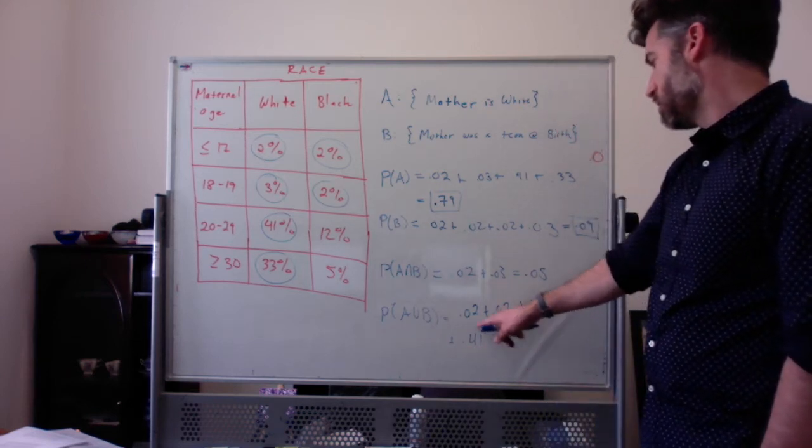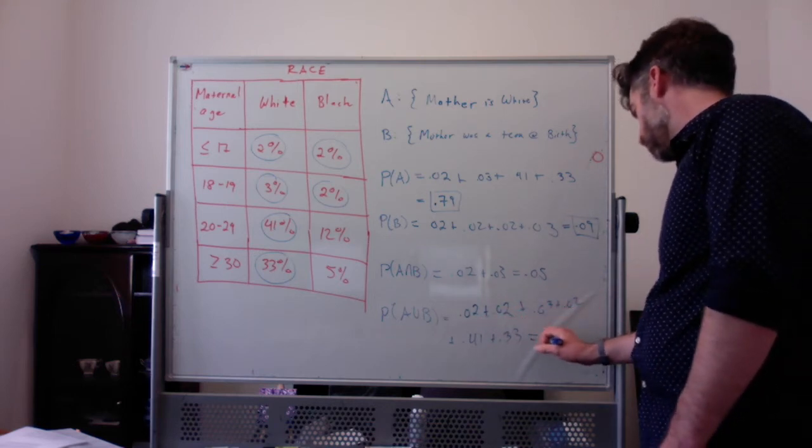Or you could just say it's 100% minus this 17%, which will be 0.83. But we could also do it: 0.02 plus 0.03 plus 0.03 plus 0.02 plus 0.41 plus 0.33. And that definitely is 0.83.